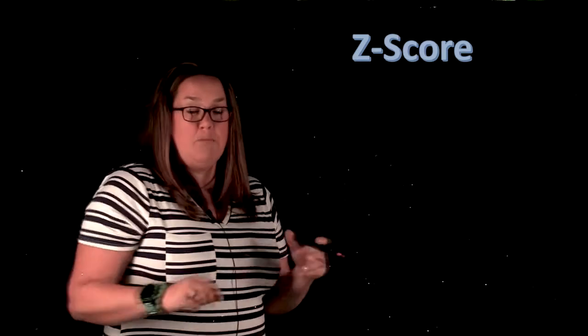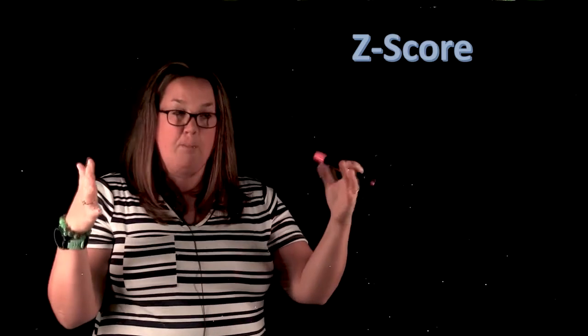You calculate what's called a z-score. It's a very similar idea to the empirical rule. It's still going to give you the distance from the mean.